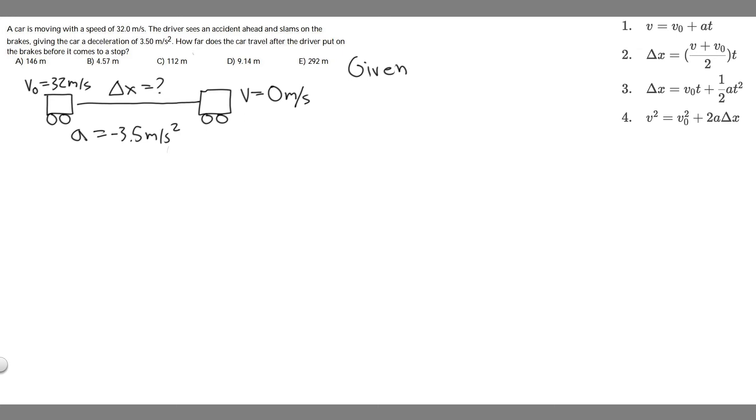If we write out the variables we're given, we're given V sub zero, which is 32 meters per second. We're given V, which is zero meters per second. And then we're given A, which is minus 3.5 meters per second squared. And so what we're trying to do is solve for delta x.